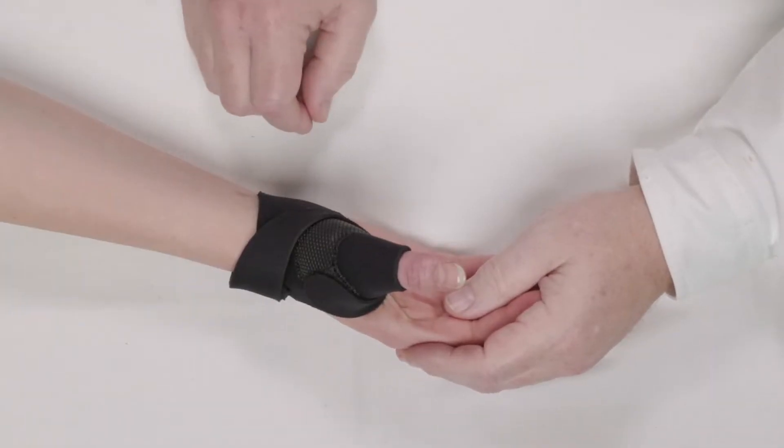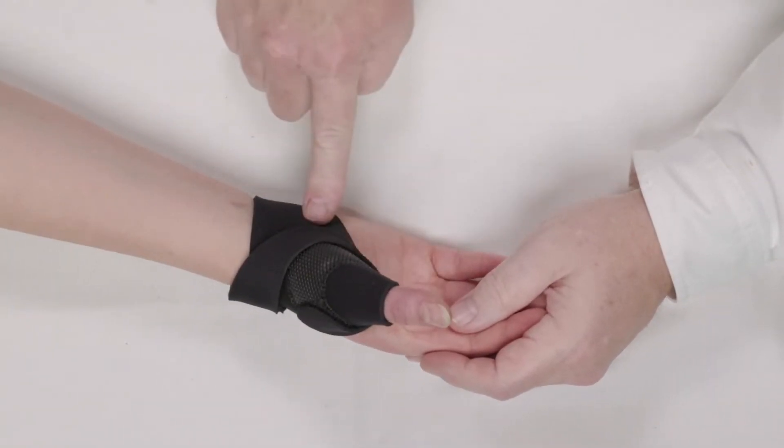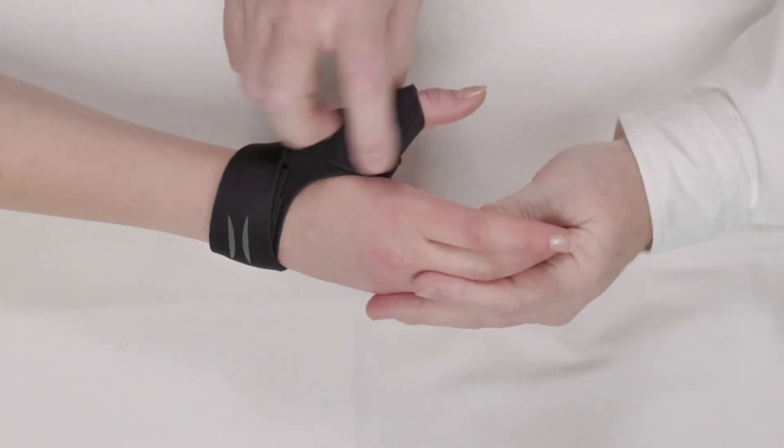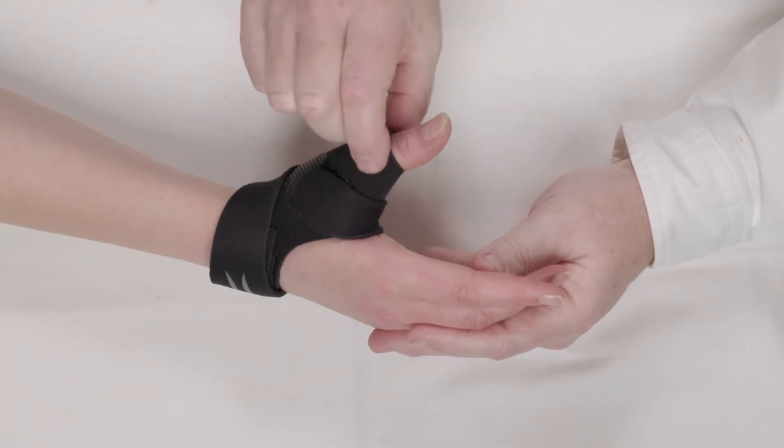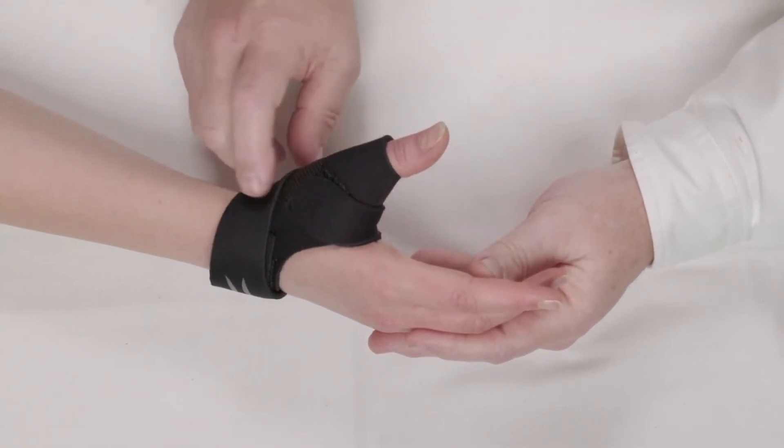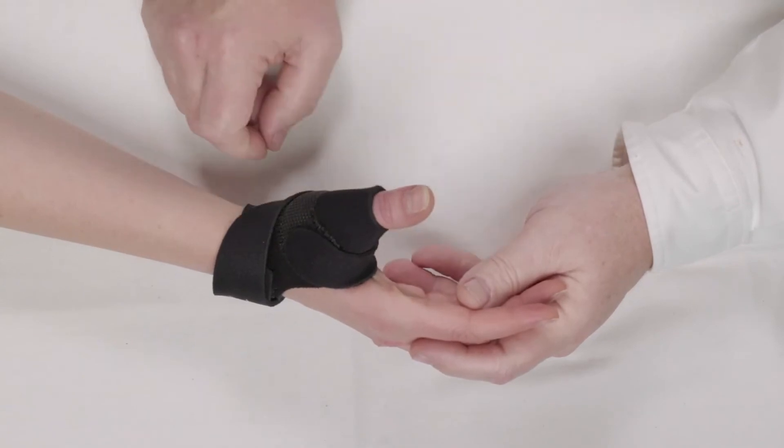The unique thing about the orthosis is that it's completely trimmable. All of the seams have been covered with MELCO taping, and that MELCO taping allows us to cut the length of the thumb or anywhere on the splint that's obtrusive to the patient without the seams fraying out.